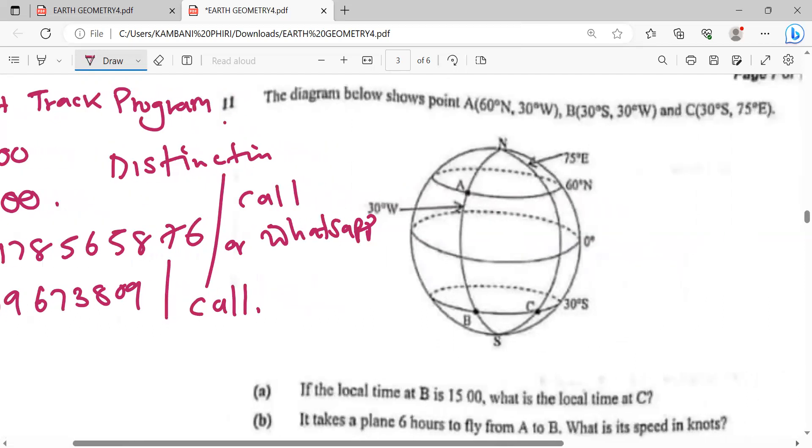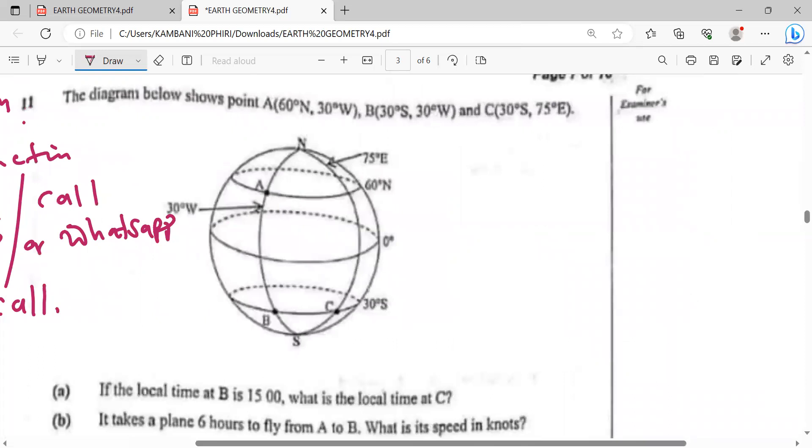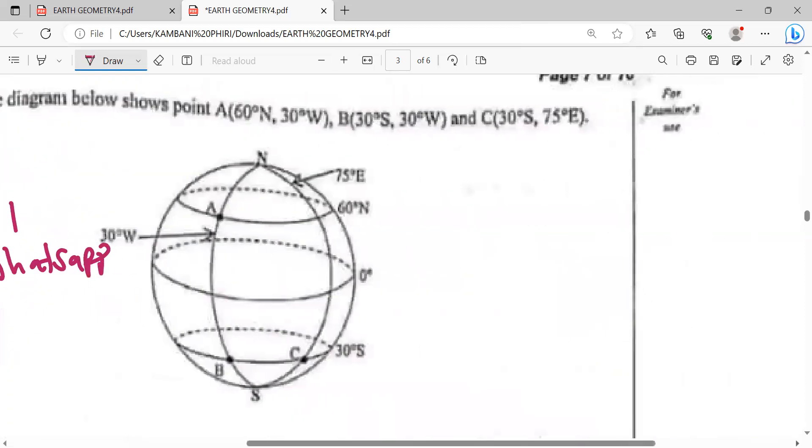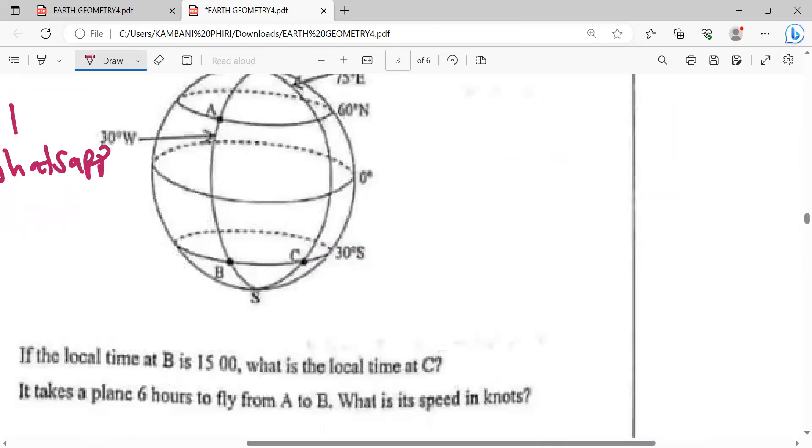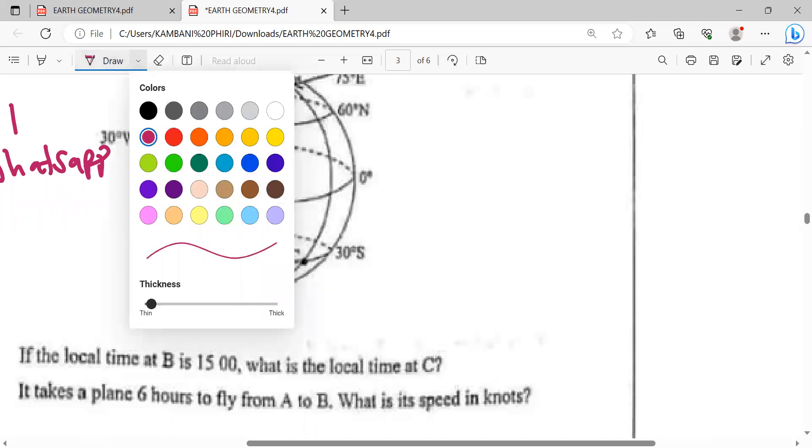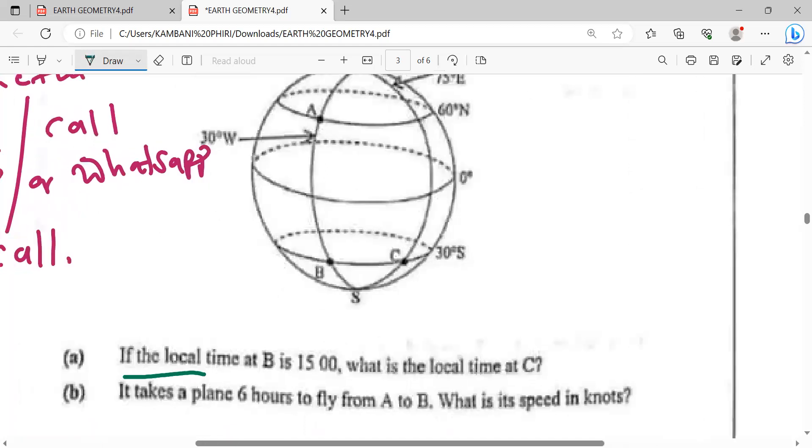Let's look at the second question. The diagram shows points A, B, and C. These questions are usually repeated. If the local time at B is 15 hours, what is the local time at C? This is where C is. We need the difference in longitude, from which we get the difference in time.